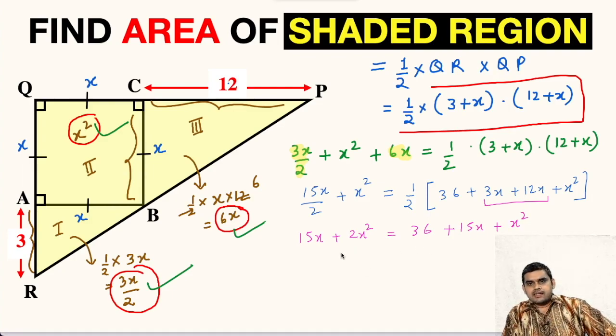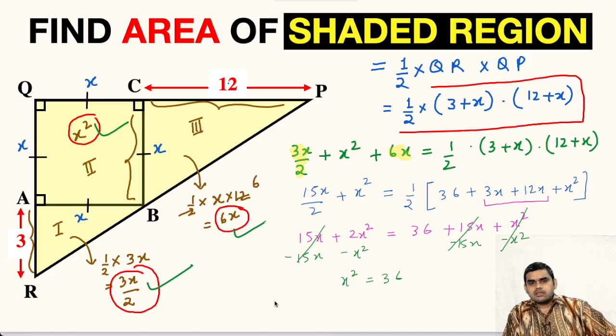Now, we will subtract X square from both sides. This will vanish. Let us subtract 15X also from both sides. This also cancels. We are left with X square equals 36, so X will be square root of 36, that is 6 units.